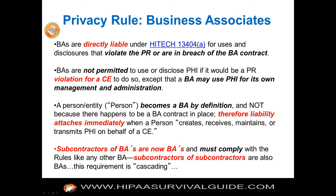Subcontractors of BAs are now also BAs, so you've got a chain of BAs, and they must comply with the rules. That means you have to have a BA-to-BA agreement. As part of our subscription plan, we have a business associate contract that can be used between a covered entity and a business associate, and one that can be used between two business associates, because they're different enough that we felt we needed to create two.